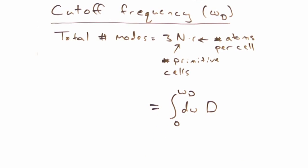And since we know the density of states, the integral is fairly trivial. Setting that equal to 3nr, we get an expression for the omega cutoff that looks like this.